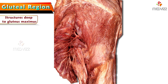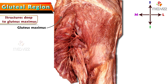This image demonstrates the structures deep to the gluteus maximus muscle. The gluteus maximus is cut and reflected to reveal the structures deep to it. This is the reflected part of gluteus maximus muscle, dissected at its insertion. We can appreciate the cut end of gluteus maximus at its insertion, and the attachment is towards the gluteal tuberosity.